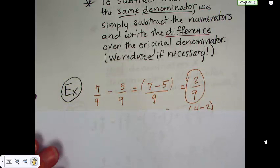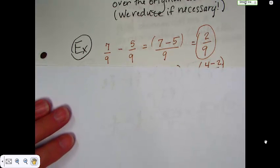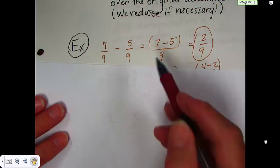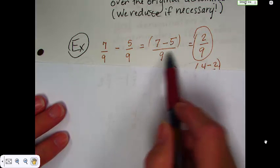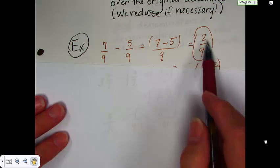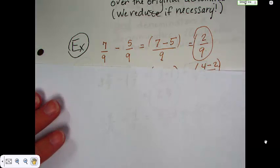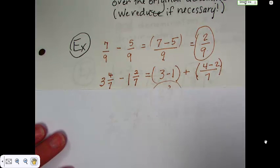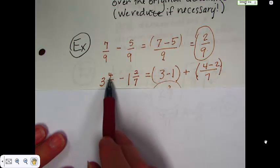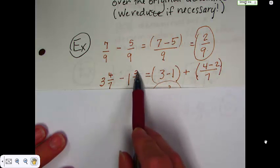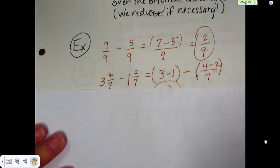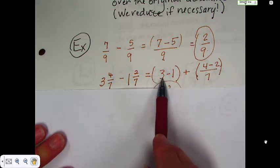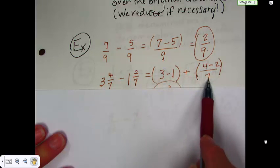So, some examples as usual. 7 over 9 minus 5 over 9 ends up to be 7 minus 5 all over that original denominator 9. And then it's 2 ninths. No reducing necessary. Okay. Now, this one works pretty well. And the reason it works really well is because this numerator is larger than this one. If it wasn't and we had borrowing involved, we'd have to do this a whole different way.